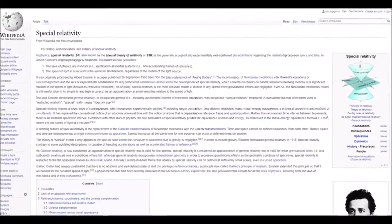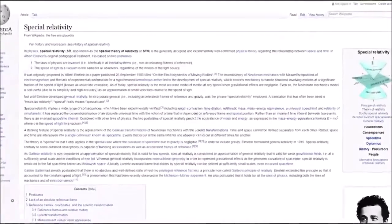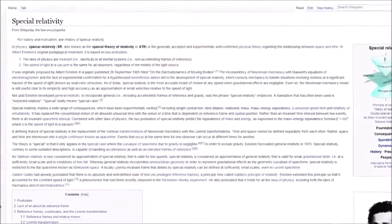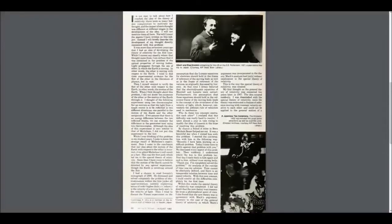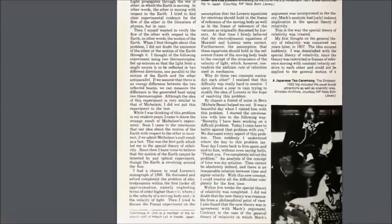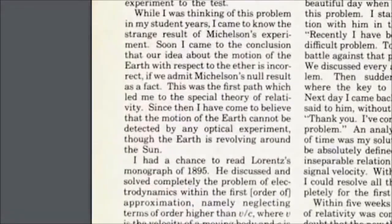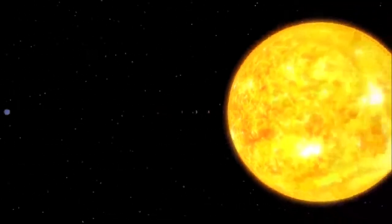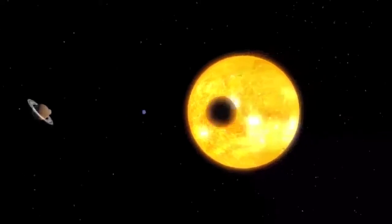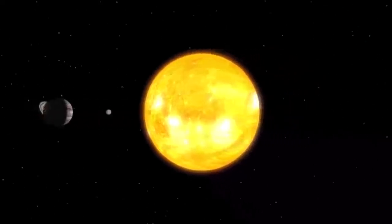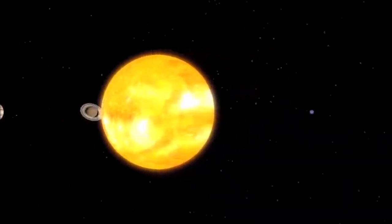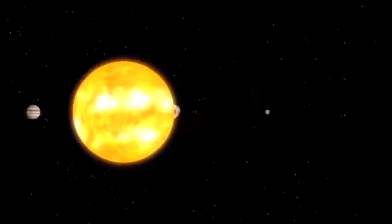This is the essence of special relativity theory that Einstein invented in 1905. Einstein believes the earth is moving but has no proof for it as noted in his statement, I have come to believe that the motion of the earth cannot be detected by any optical experiment, though the earth is revolving around the sun. Einstein's admission merely begs the question, if one scientific basis he can't detect the earth moving, how does he know the earth is moving?